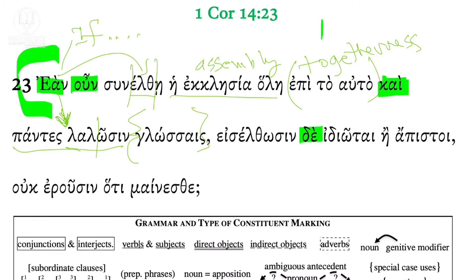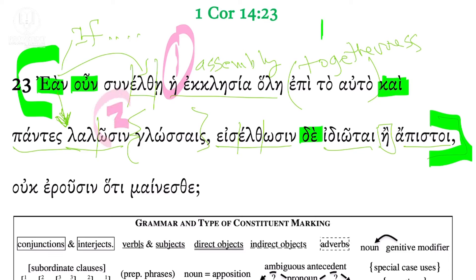Moreover, so here we have a third part. This is adding a distinctive development. The 'if' part is still continuing. And, moreover — idiōtai or apistoi eiselthōsin — uninitiated or unbelievers come in, enter in. So this is a three-part protasis, the 'if' part: step one, the whole church comes together; two, they're speaking in tongues; and three, uninitiated or unbelieving people enter in. That's all the supposition.